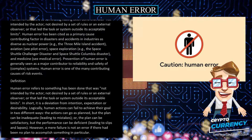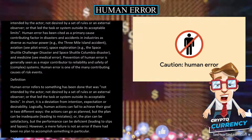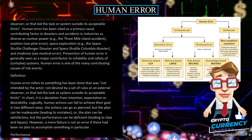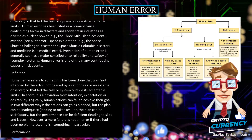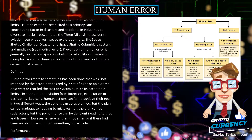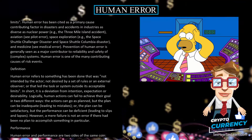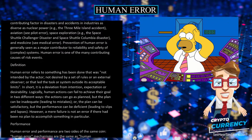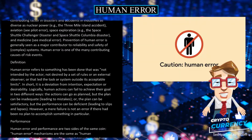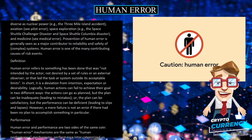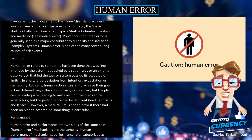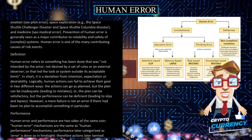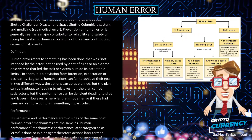Human error is one of the many contributing causes of risk events. Human error refers to something that was not intended by the actor, not desired by a set of rules or an external observer, or that led the task or system outside its acceptable limits. In short, it is a deviation from intention, expectation, or desirability.